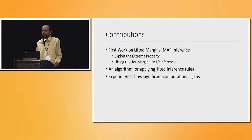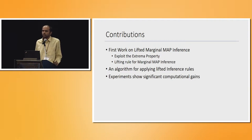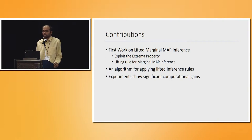Before I go to the meat of the talk, let me briefly describe the contributions of this work. There are three broad contributions. The first is more technical: we define something called an extrema property. Intuitively, this shows that in certain cases, ground atoms of our theory will all have either true or false assignments. We use this property to come up with a rule for lifting marginal MAP inference. We also give an algorithm applying this rule along with existing rules. Finally, I'll show experiments demonstrating significant computational gains compared to existing approaches.